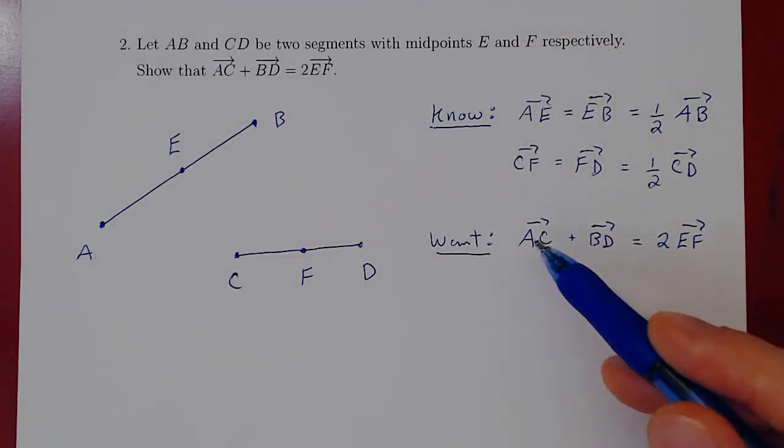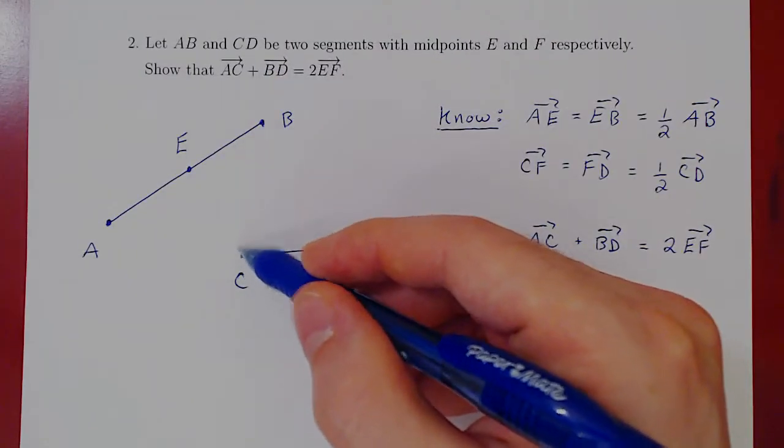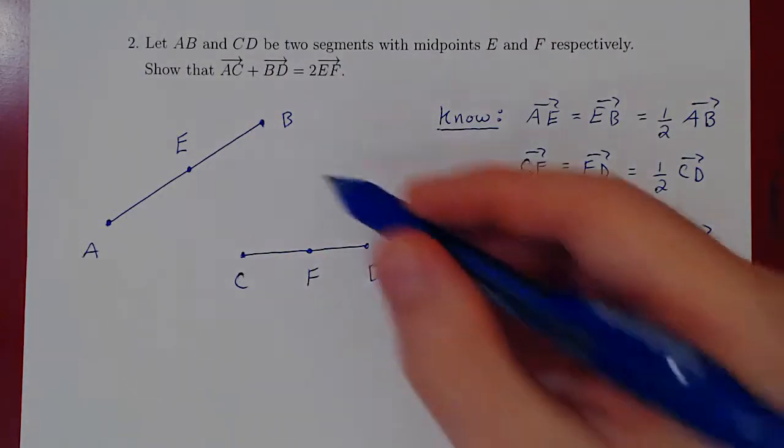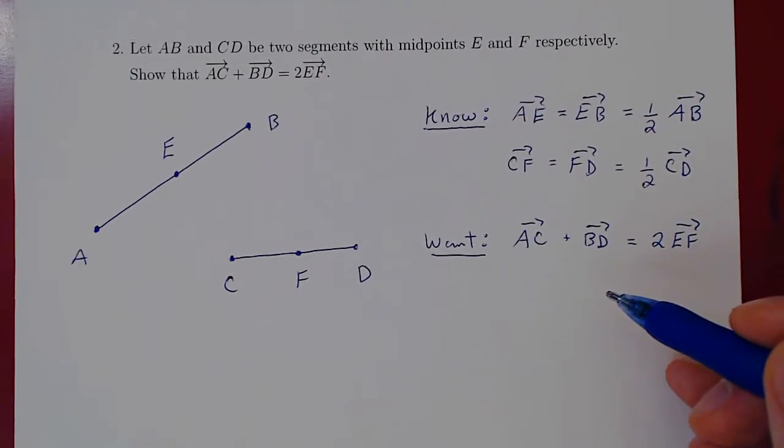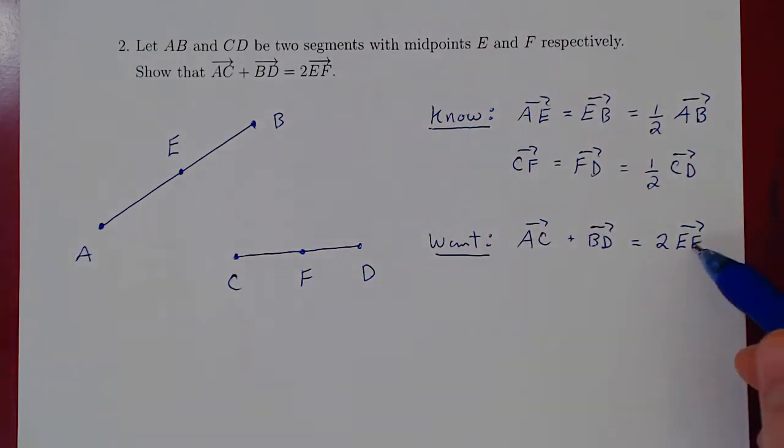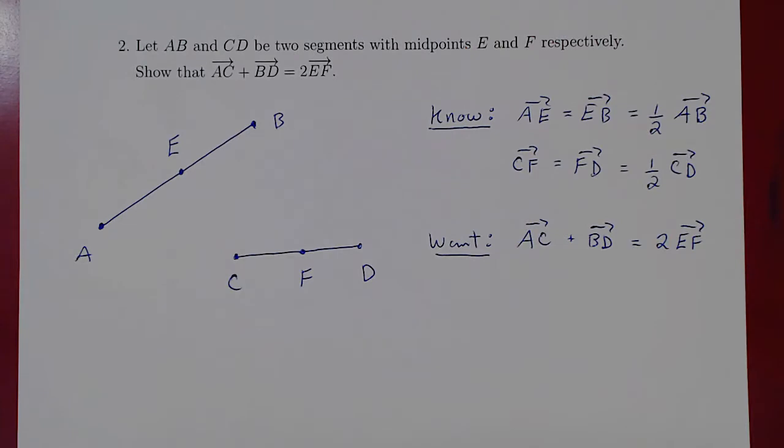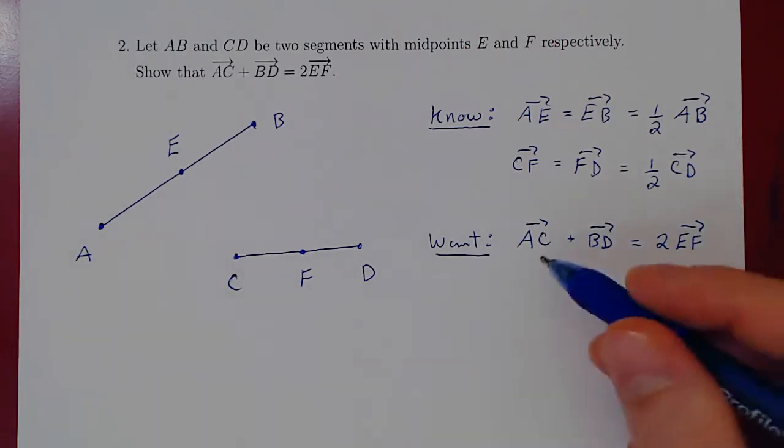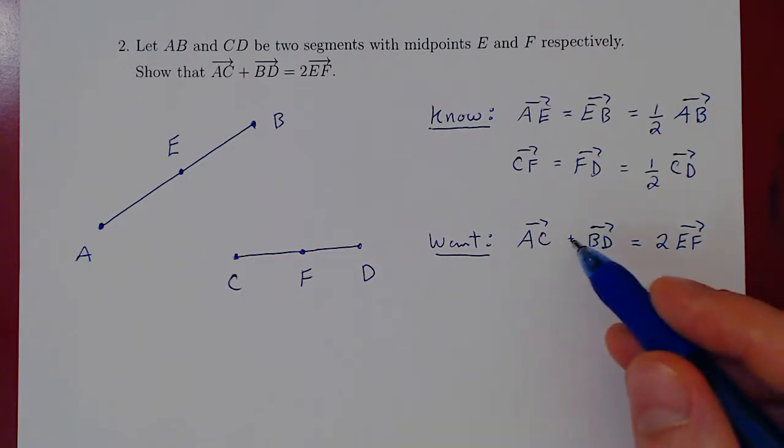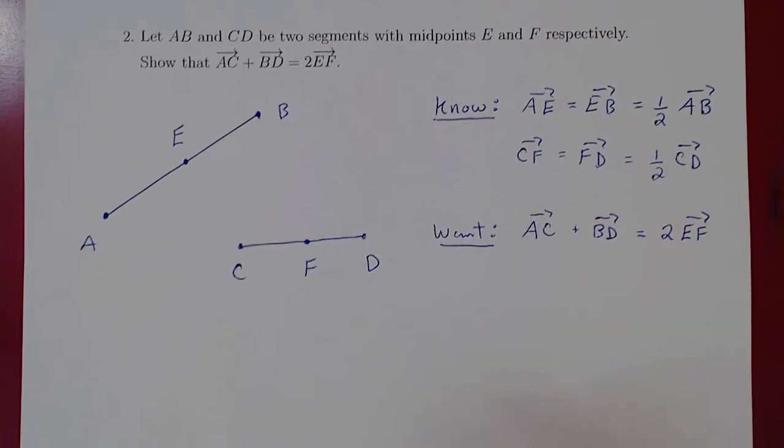Think of what this is saying. The vector AC would be this vector, plus the vector BD, which is this vector right here. And the claim is that the result will be twice of the vector EF. The idea is when you have an equality between two vectors, namely this one and this one, start with one side and try to get to the other side. So we'll start with the left-hand side.